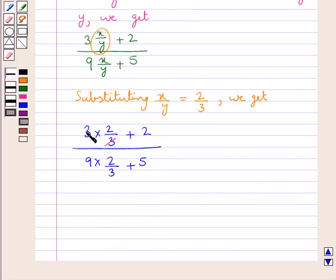This 3 cancels with 3, and 3 times 3 is 9. So this is equal to 2 plus 2 upon 3 multiplied by 2 is 6 plus 5. Thus we get this is equal to 4 upon 11.